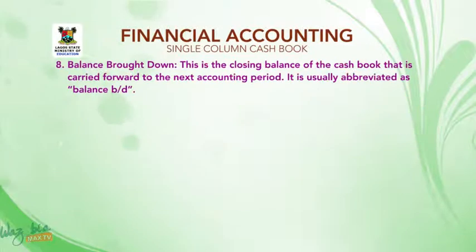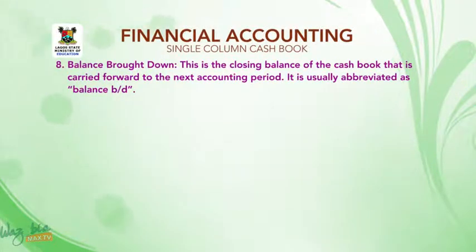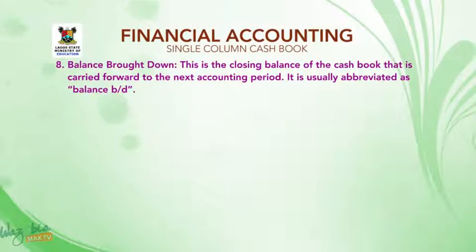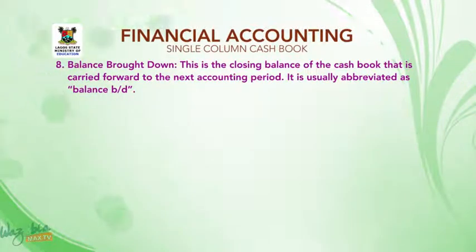Number eight: Balance brought down — this is the closing balance of the cashbook that is carried forward to the next accounting period, usually abbreviated as balance B/D.